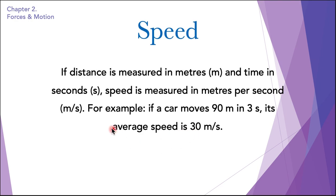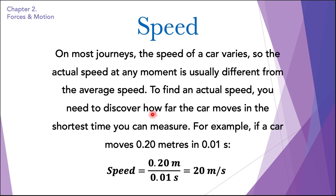We always say average speed because on most journeys the speed of a car varies. The actual speed at any moment is usually different from the speed we have measured — that is why we call it average. To find an actual speed, you need to discover how far the car moves in the shortest time you can measure. For example, if a car moves 0.20 meters in 0.01 seconds, then the speed is 20 meters per second.